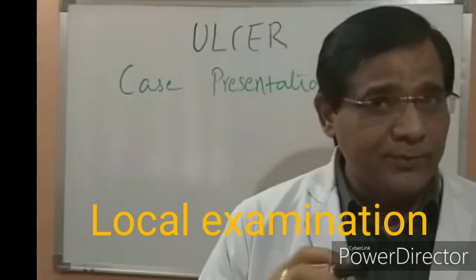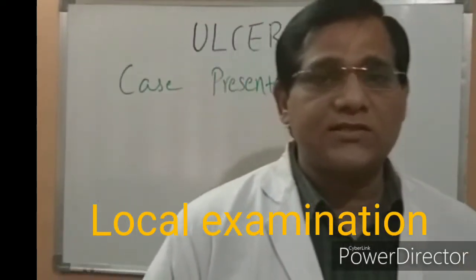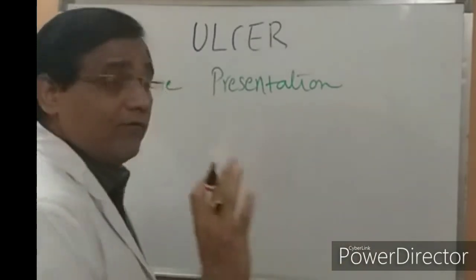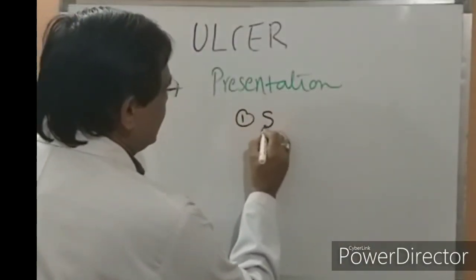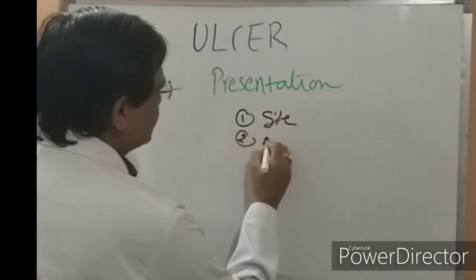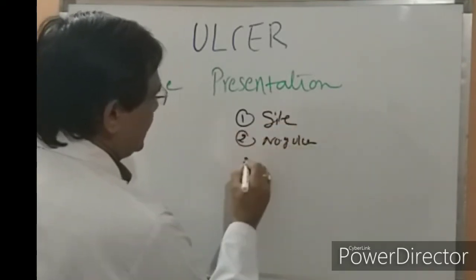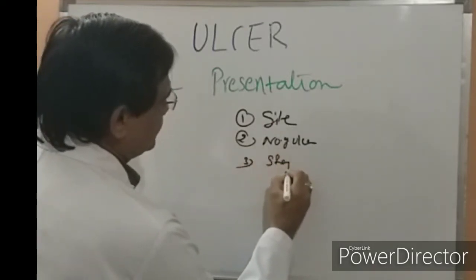Before presenting the local examination, here are the important things to look for in an ulcer: first is the site of the ulcer, second is the number of ulcers, and third is the shape of the ulcer.